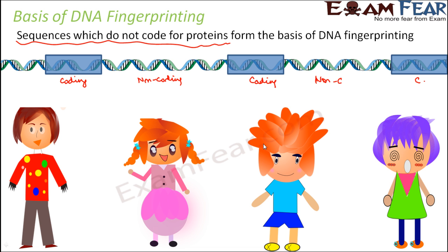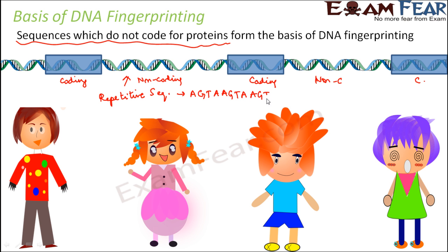In the non-coding regions are present repetitive sequences — small segments which keep repeating themselves, sometimes as many as 50 times. For example, a sequence like AGTA repeating over and over. These are known as tandem repeats. Based on these tandem repeats, there is a term called VNTR — Variable Number Tandem Repeats — meaning segments that get repeated for a variable number of times.